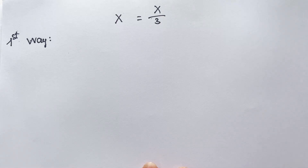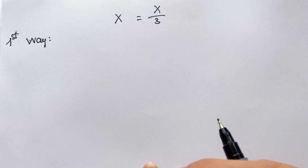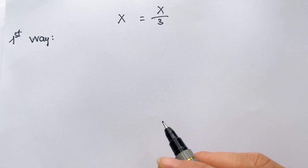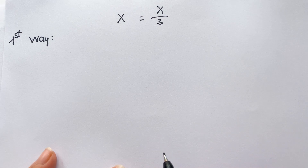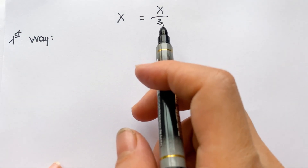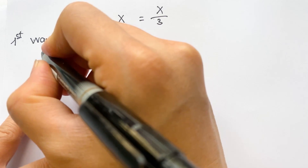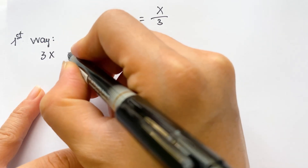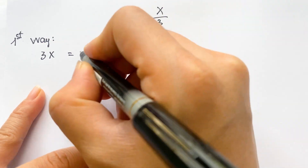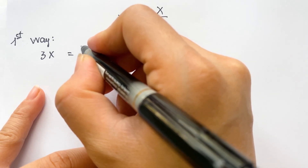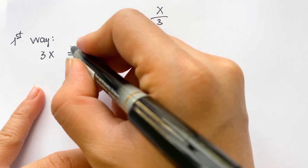Hello everyone. How to solve the equation in three ways — we have three simple best ways to solve that. Firstly, you can see x equals x over three. You can rewrite and cross multiply to get three x equals x.